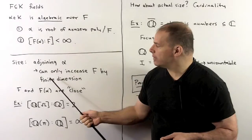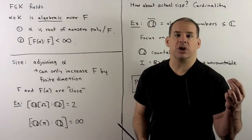We have size in terms of dimension. How about the original measure of size, cardinality?